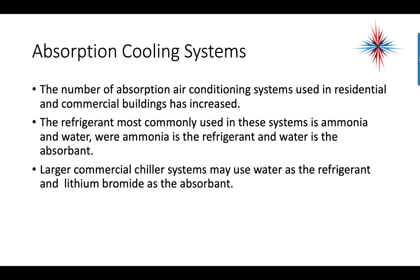The number of absorption air conditioning systems used in residential and commercial buildings has increased. The refrigerant most commonly used in these systems is ammonia and water, where ammonia is the refrigerant and water is the absorbent. Be very careful when servicing these systems — ammonia is a breathing and inhalation hazard. Larger commercial systems may use water as the refrigerant and liquid bromide as the absorbent.